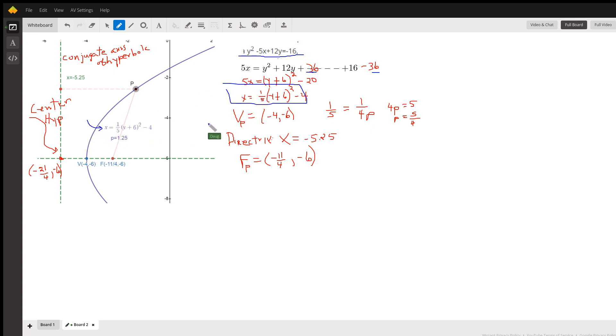And there's the vertex form with the equation of the parabola right there. Okay, and when it's written that way, then this coefficient right here is equal to 1 over 4p, and if I solve for p, I get 5 fourths.